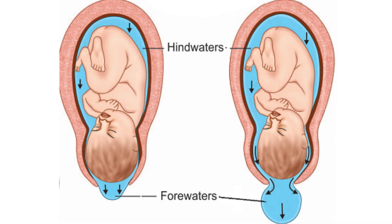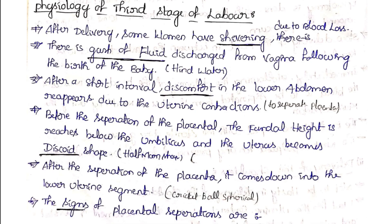In the second stage of labor, the forewater is expelled out. In the third stage of labor, a gush of fluid is discharged from the vagina following the birth of the baby — the fluid is expelled out after the baby. After a short interval, discomfort in the lower abdomen reappears due to uterine contractions.